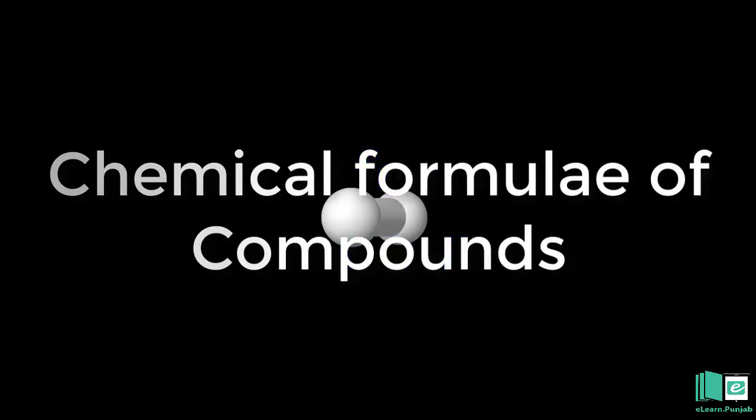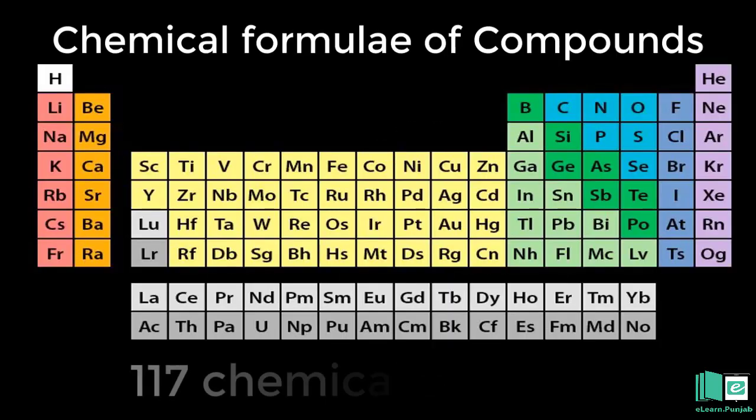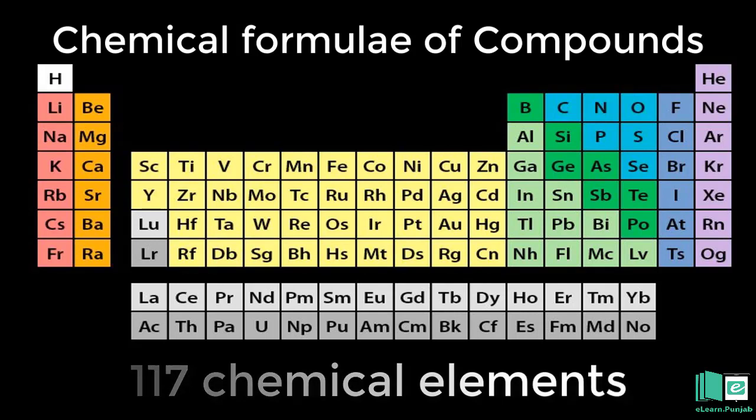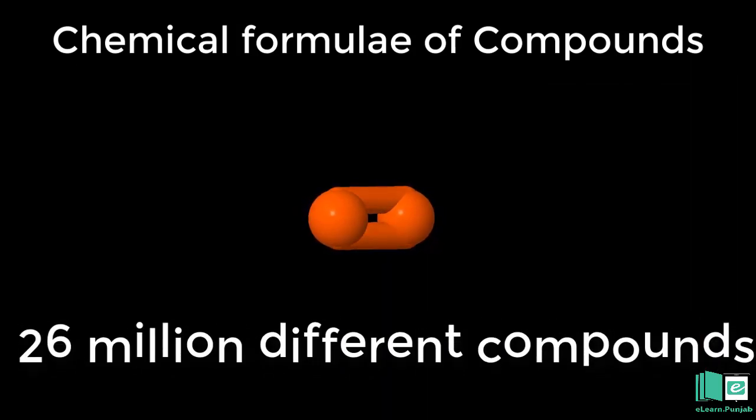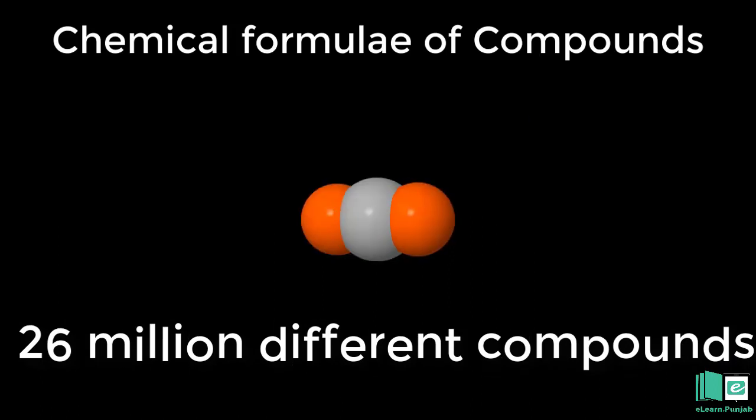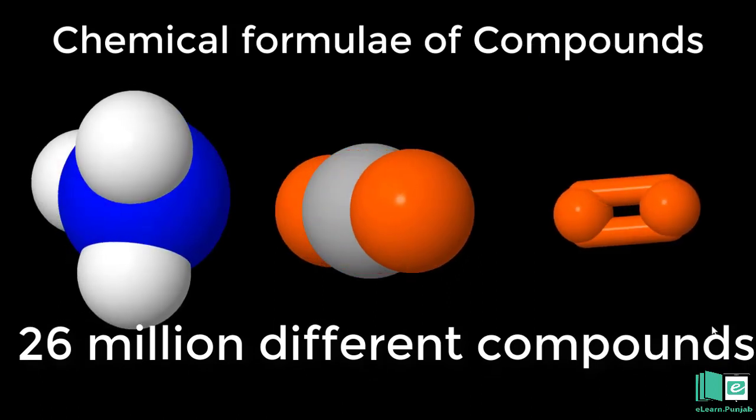Chemical Formula of Compounds. There are 117 chemical elements. Scientists have found or made 26 million different compounds, many of them in the last 80 years.